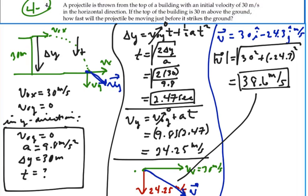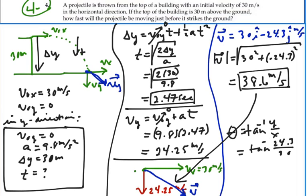That is the magnitude of this vector right there. The angle would be the inverse tangent of our y over our x. So that would be 24.3 over 30 inverse tangent. That is 39 degrees, and that would be below the positive x-axis. So that's how it's going to hit at an angle of 39 degrees below the positive x-axis at a speed of 38.6 meters per second.